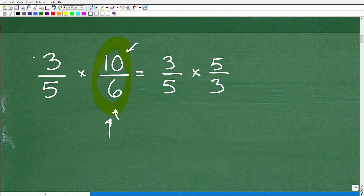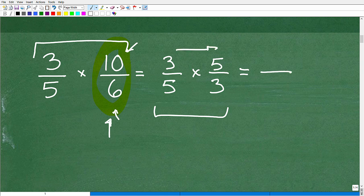So doing this problem is equivalent to doing this problem. So when I do this, now let's just think about it. I have common factors, 5 and 5, I can cross-cancel and 3 and 3, or I can just multiply across. So I have my numerators, that's 3 times 5 is 15. My denominator is 5 times 3, that's 15. 15 divided by 15 is 1.